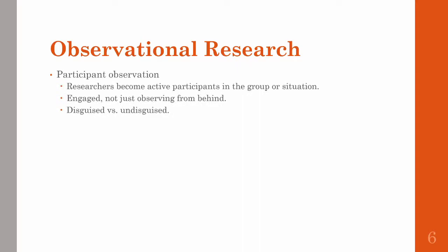In participant observation, researchers actively engage with participants in a group or situation. In disguised participant observation, subjects don't know that the person they are engaging with is the researcher. In undisguised participant observation, subjects are made aware that the person they are engaging with is researching and monitoring them.